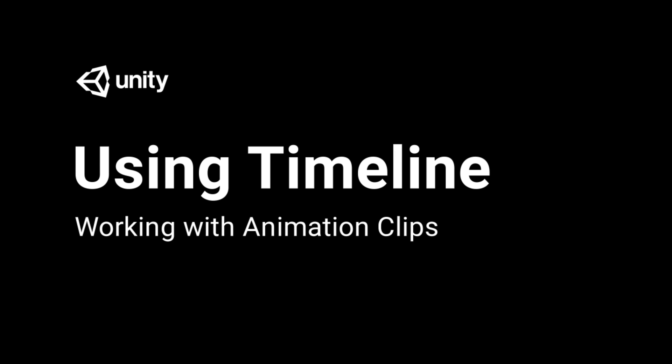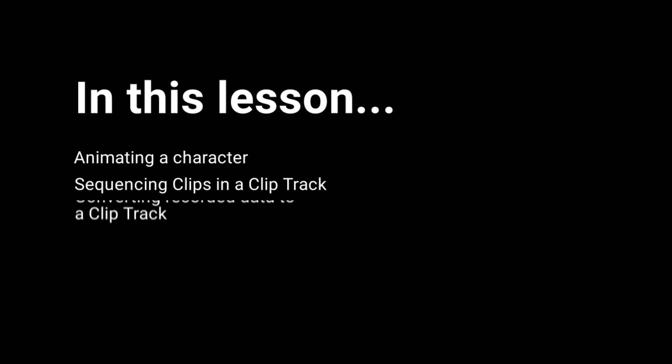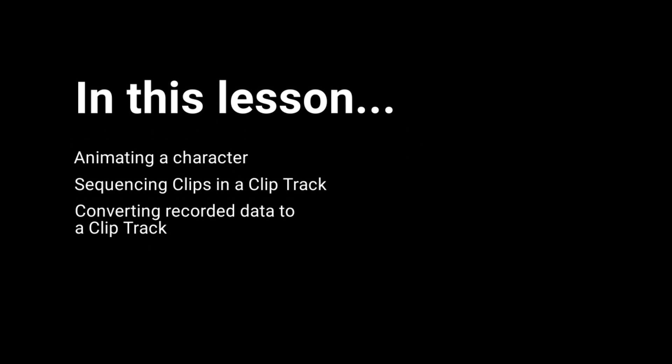In this video, we're going to look at how animation clips can be used in a timeline track to sequence different animations on a character, and how to transition between them. We're also going to take a look at how we can convert our recorded data into clips that we can work with.